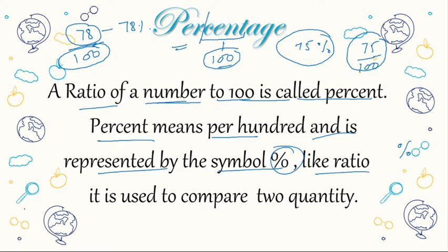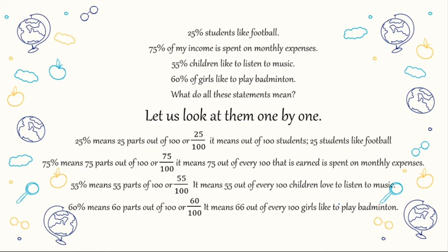Like a ratio, percentage is used to compare two quantities. For example: 25% of students like football; 75% of income is spent on monthly expenses; 55% of children like to listen to music; 60% of girls like to play badminton. So what do all these statements mean?